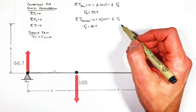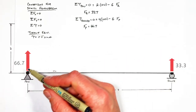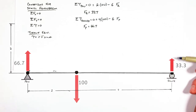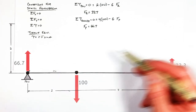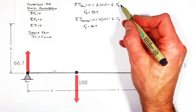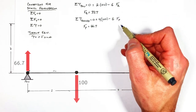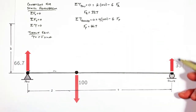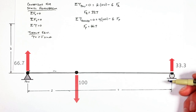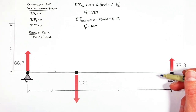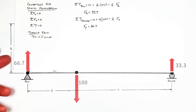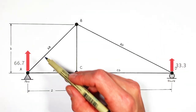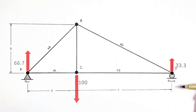One thing to note: we assumed both reaction forces were upward because it's clear something has to hold the truss up. In more complicated trusses, if you assume a reaction force is upward and get a negative value, that simply means you guessed wrong — the reaction force is in the opposite direction of what you assumed. Now that we know our two reaction forces, we can bring the truss back and solve for the force in each beam using the method of joints.